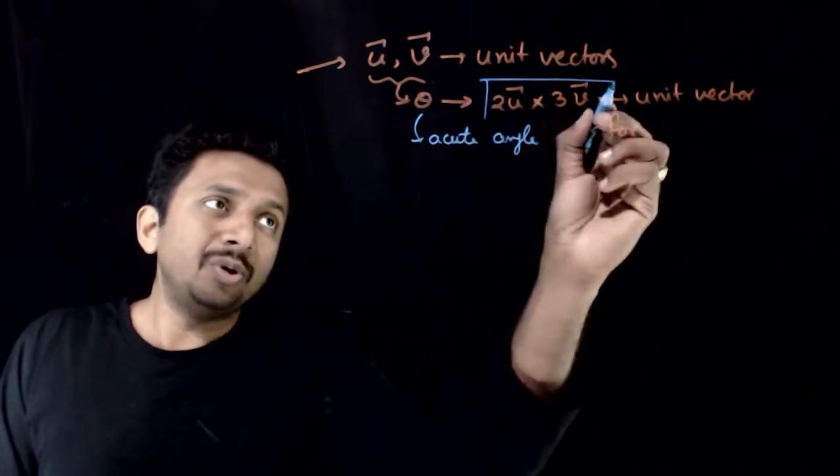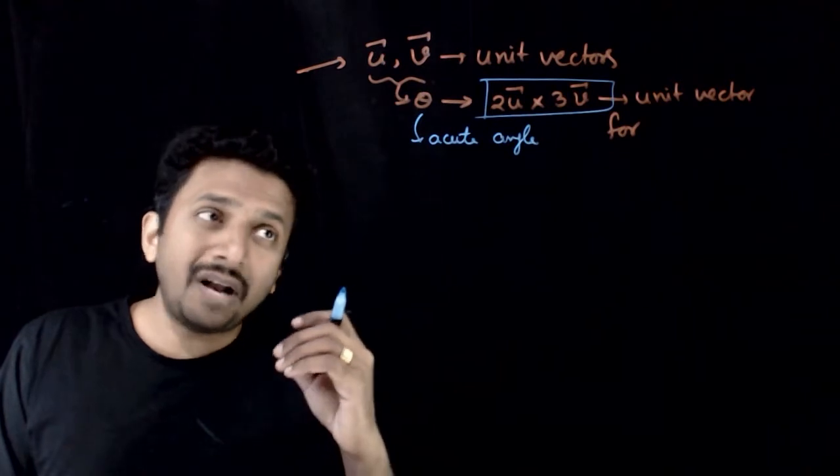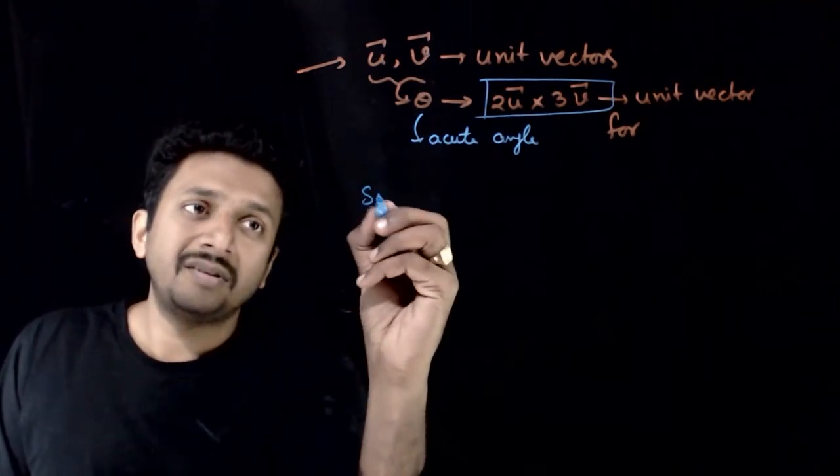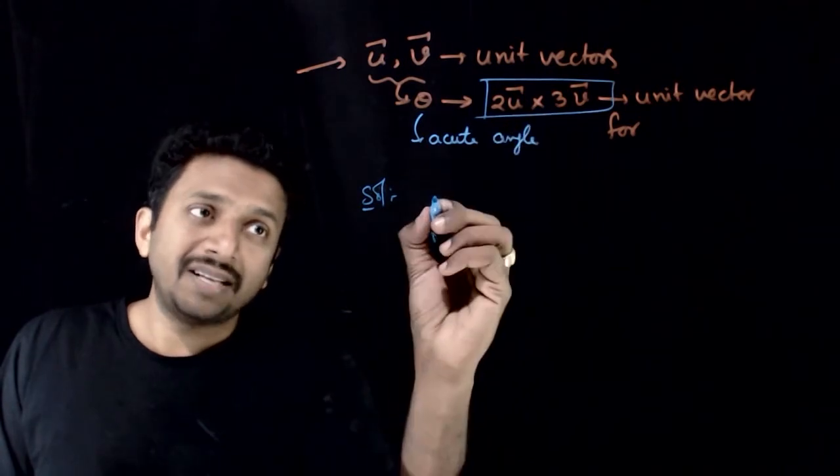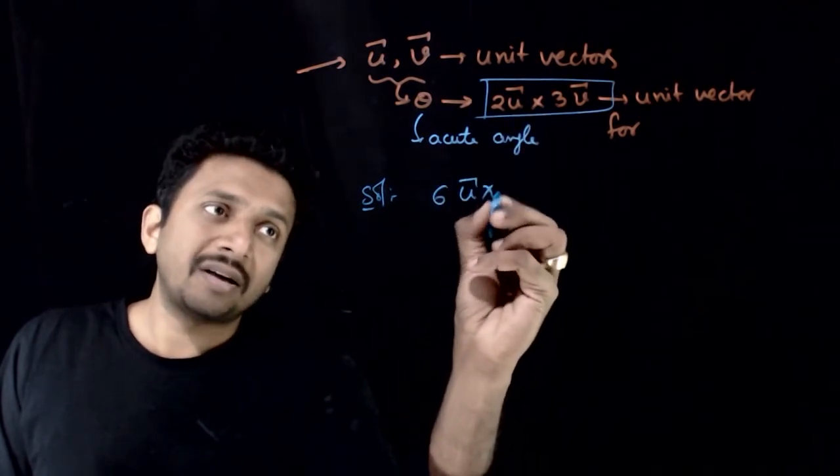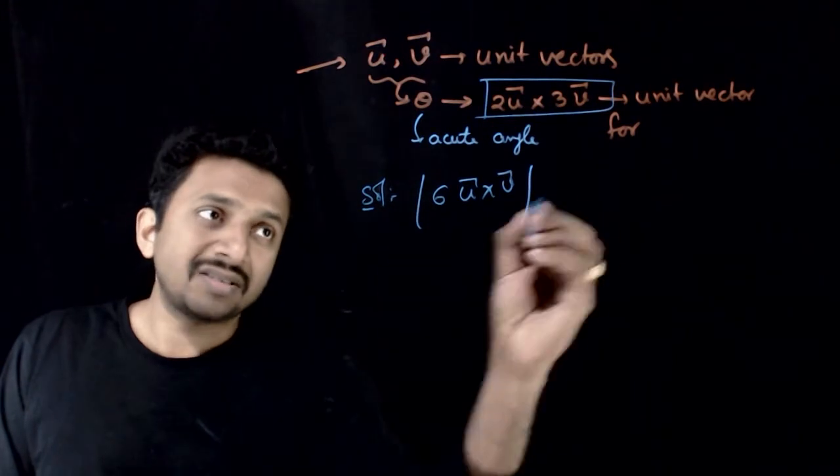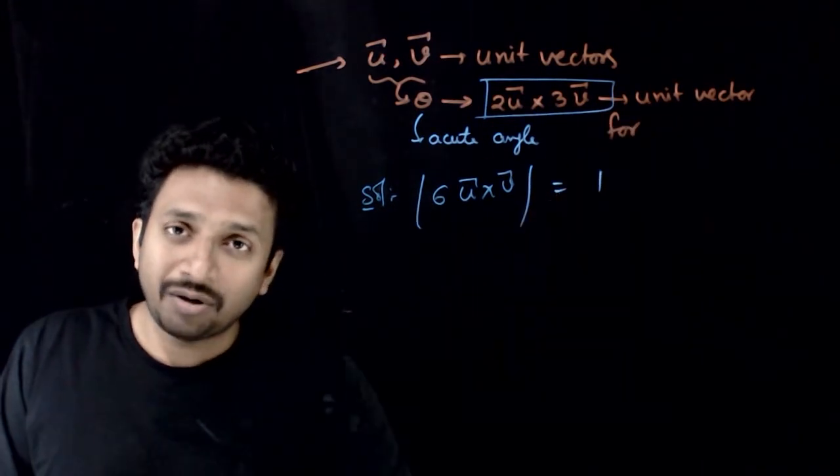And 2 u bar cross 3 v bar is a unit vector for how many values of theta? So 2 u bar cross 3 v bar is nothing but 6 times u bar cross v bar. So, what is the modulus of this? It has to be equal to 1 according to the question.